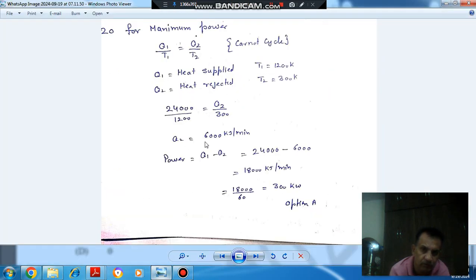So Q2 is 6,000 kW per minute. So power is Q1 minus Q2, that is 24,000 minus 6,000, 18,000 kW per minute.